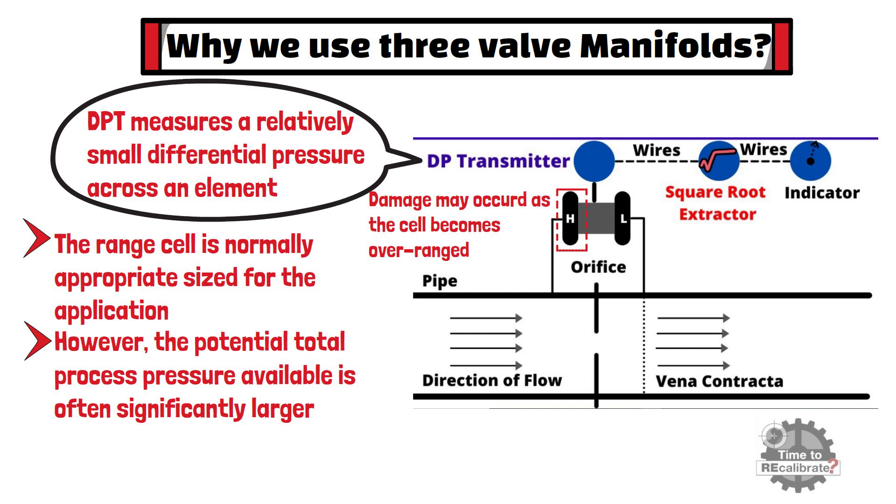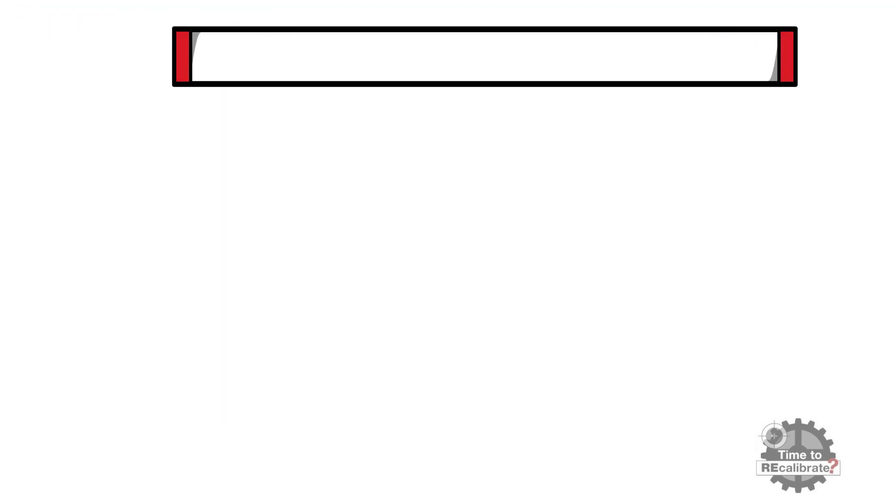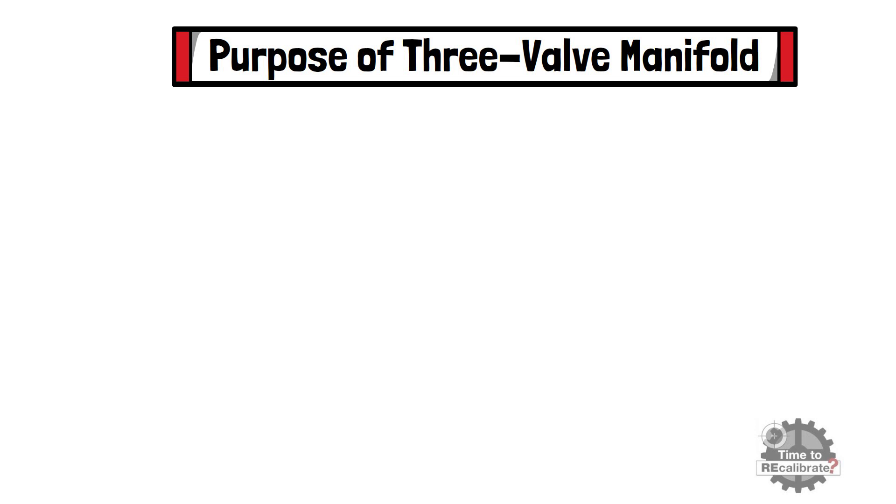This generally happens when putting the transmitter into service or taking it out of service. Now, let's learn what is exact purpose of three valve manifold.